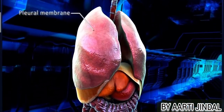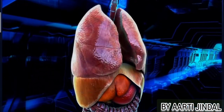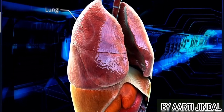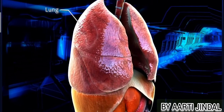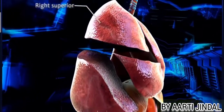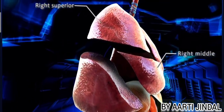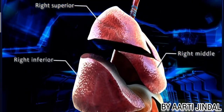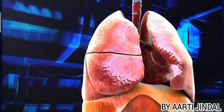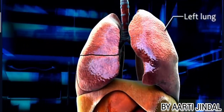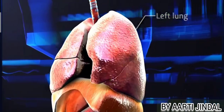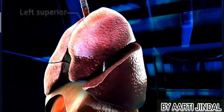Present within the ribcage are the pleural membranes, which include the lungs. The right lung is divided into three lobes: the right superior, right middle, and the right inferior lobe. The left lung is smaller and has only two lobes.